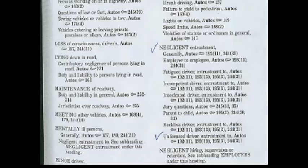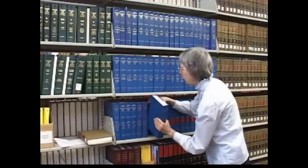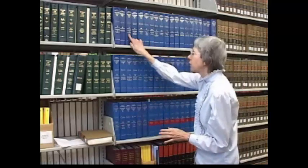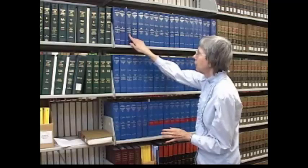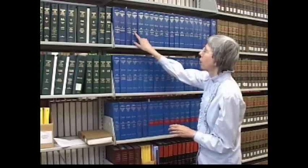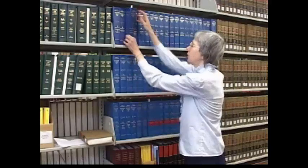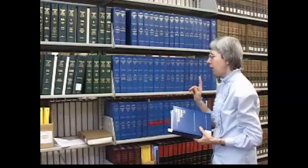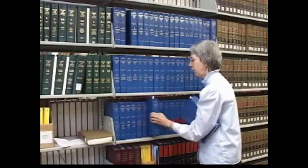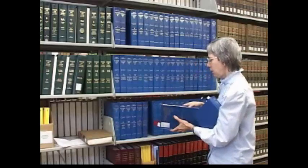Once we go in under autos, we need to look up the key numbers and trace it through. I'm going to pick up automobiles, and those key numbers will start there. Automobiles will continue in another volume picking up later key numbers starting with 252. And by the way, we never finish our search without going to pocket parts — it's very important to check the pocket parts.